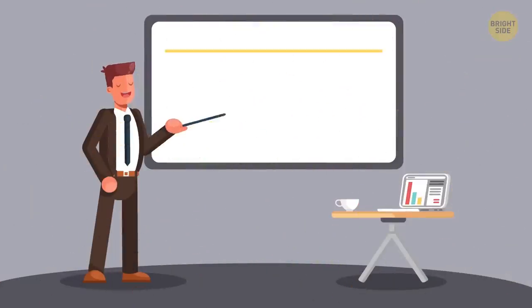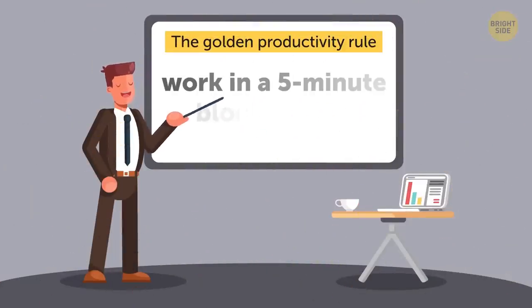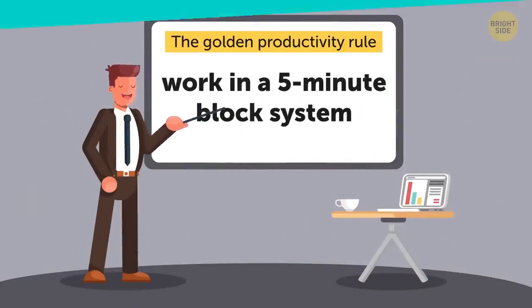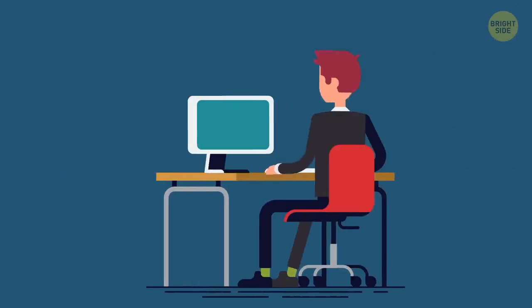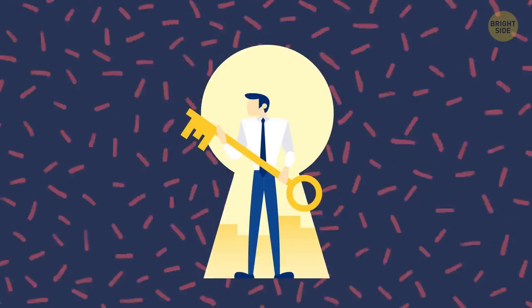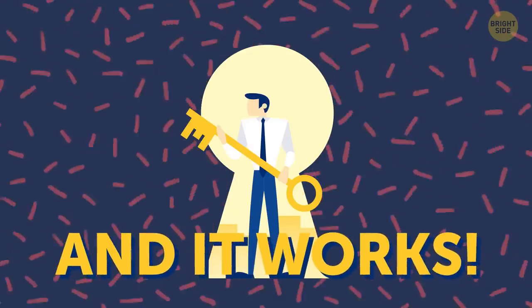One of Musk's golden productivity rules is to work in a 5-minute block system, which means that for 5 minutes, I had to stay completely focused on one thing and then switch to another. This is the key to his unbeatable multitasking skills, and his system really works.